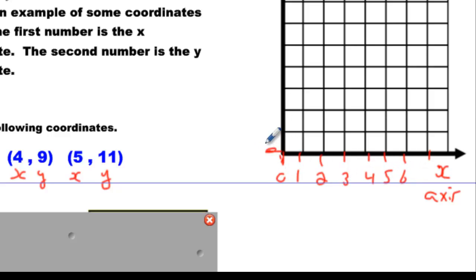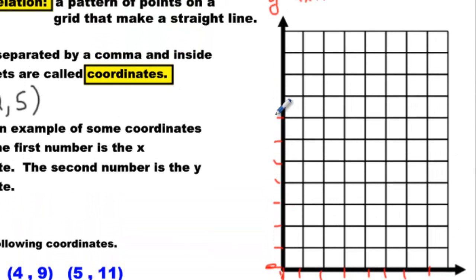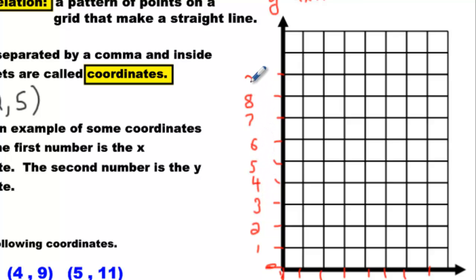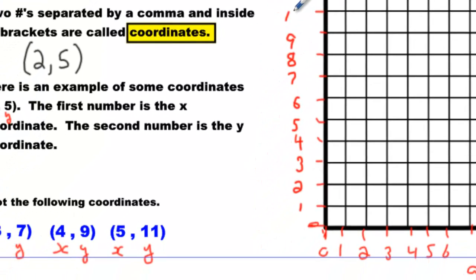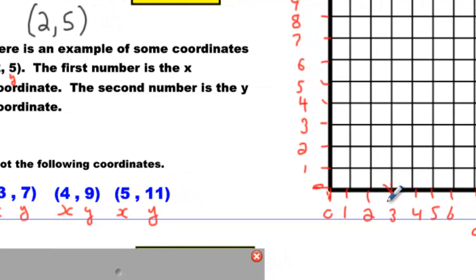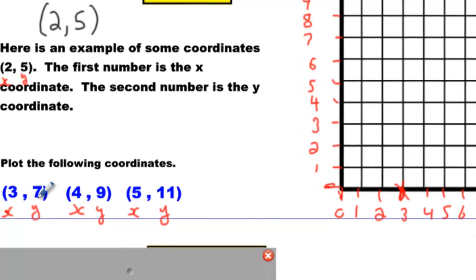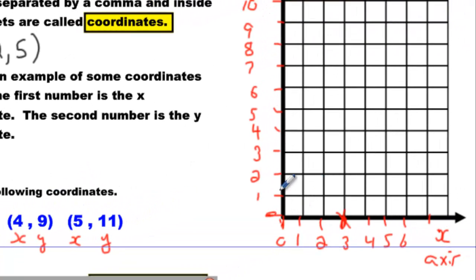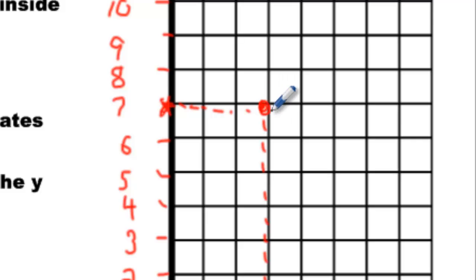And then on the vertical one, go ahead and label it. We're going to go from 1, 2, 3, 4, 5, 6, 7, 8, 9, and let's go all the way to 11. Now what you do is you look at x — it says x is 3, so go to x=3 and make a mark. Then find where y is 7. y is the vertical one, so make a mark at 7. Where the two points meet is where your coordinate will go — right here.